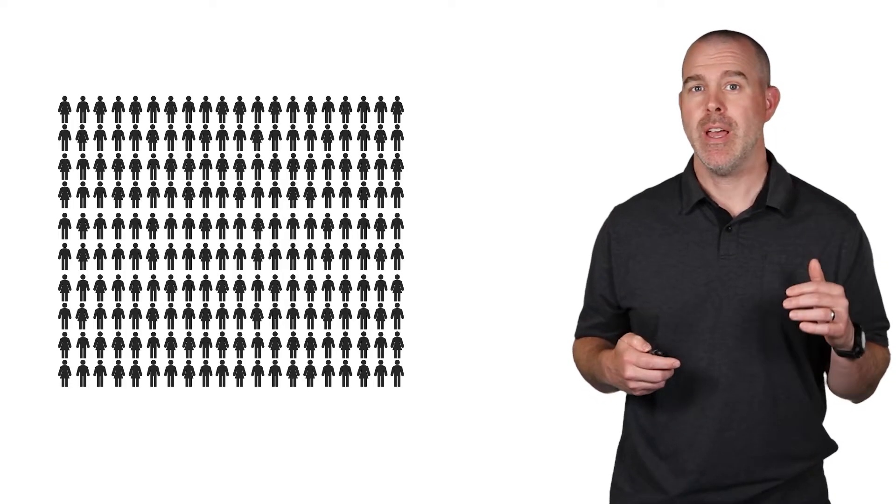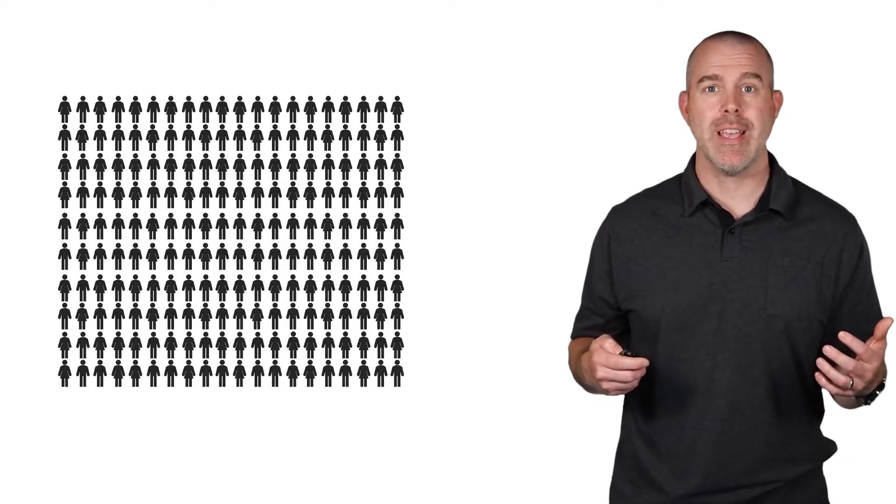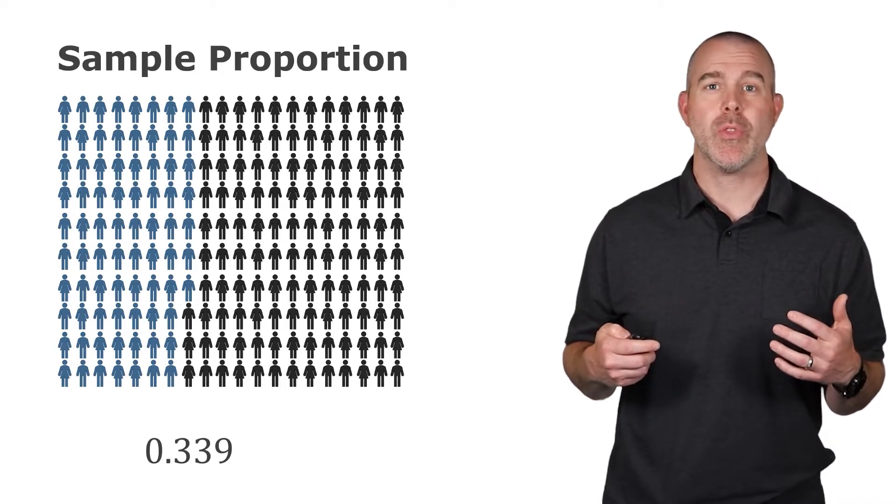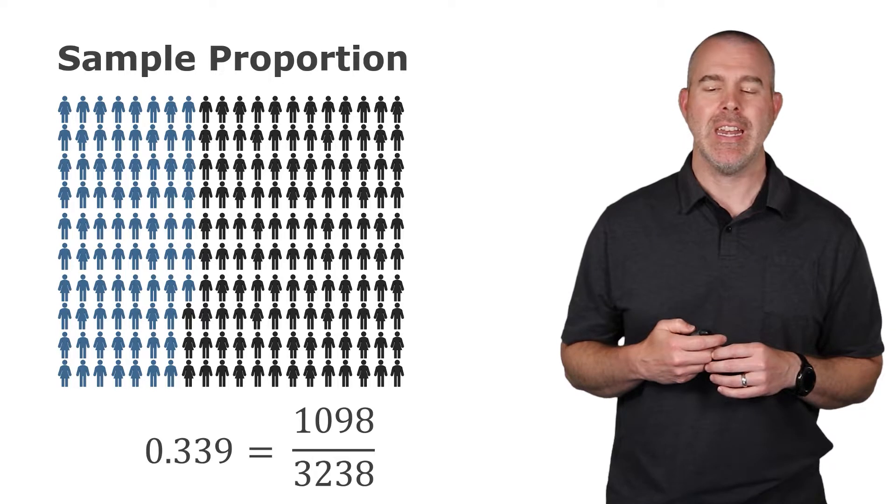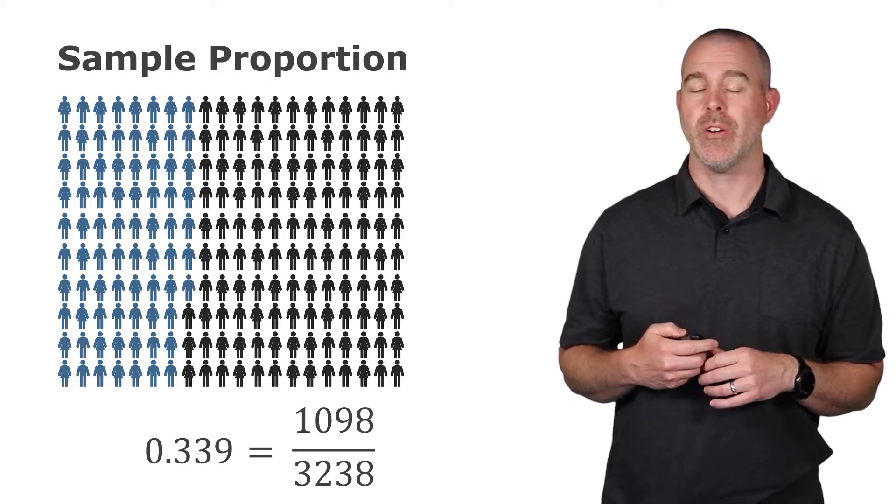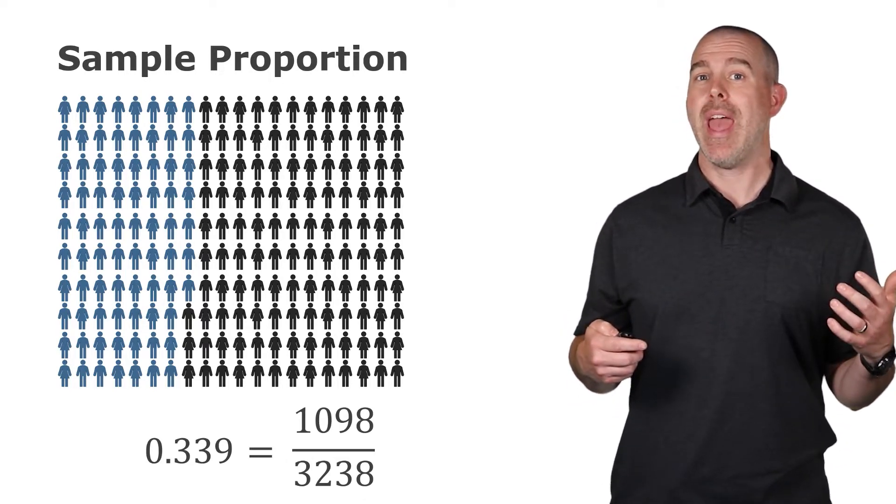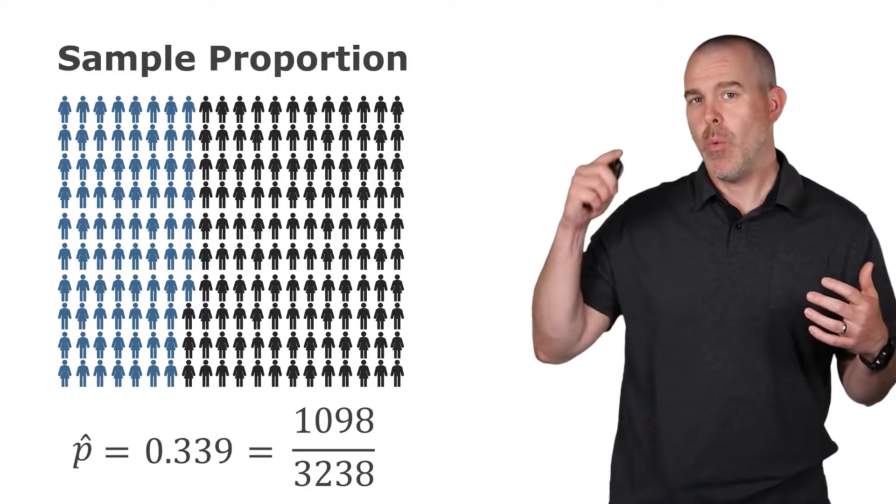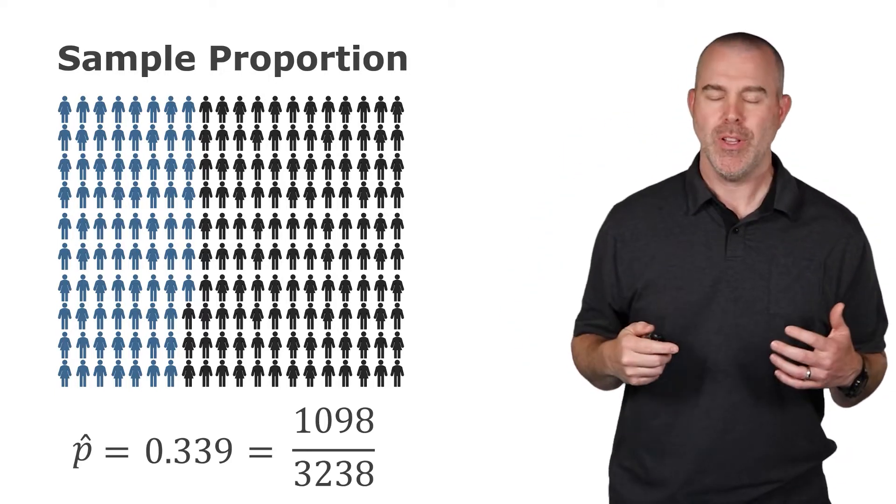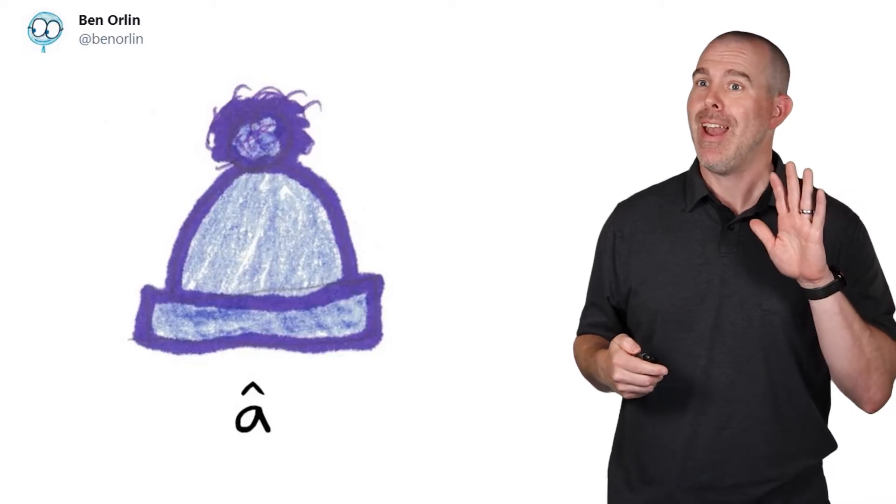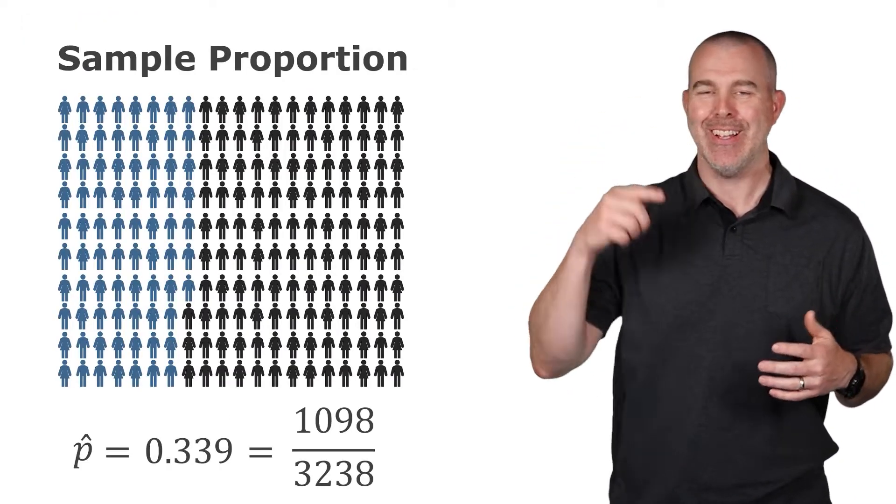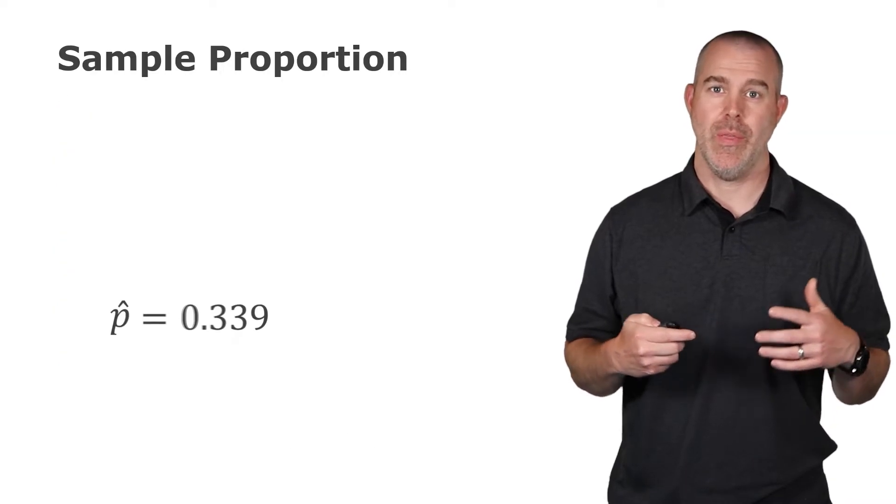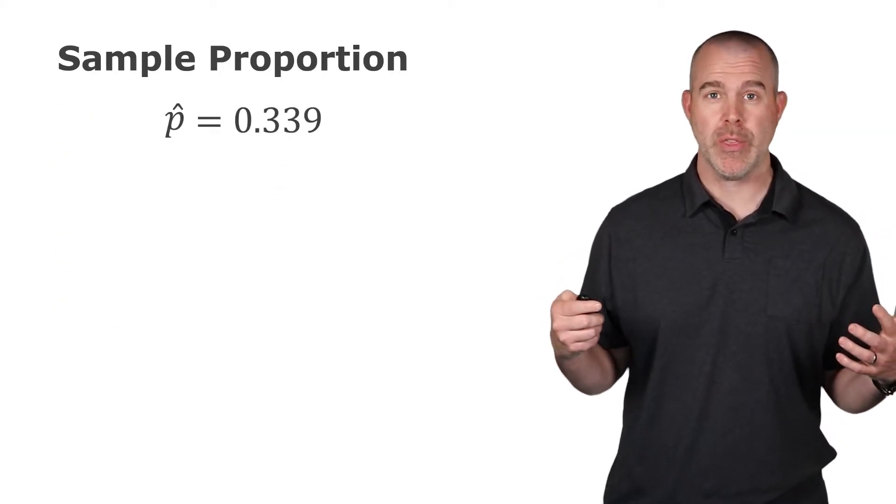Now, if we look at our sample and look at the proportion from that sample, it's about 0.339. The specifics here, it's 1,098 over the total 3,238. And the notation we have for this is p with a little carat symbol over it, like p-hat is how we say it, with that little triangle over the top. So that's the sample proportion, 0.339.